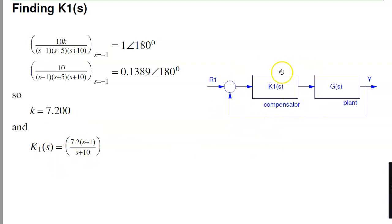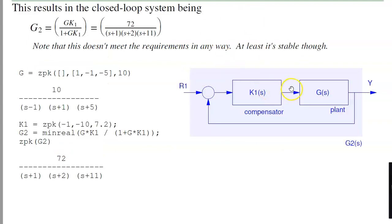Now that I have this system, I can replace G times K1 over 1 plus G times K1. Find that closed loop system. And there's the pole at minus 1. That's the one I placed. And it's third order, so I've got two other poles somewhere. Treat this as my new system. Now design a feedback controller K2 to control this system and meet the design specs. Again, G2 isn't great. It doesn't meet the requirements in any way. The steady state error is wrong. The DC gain is wrong. The settling time is wrong. The overshoot is wrong. At least it's stable.